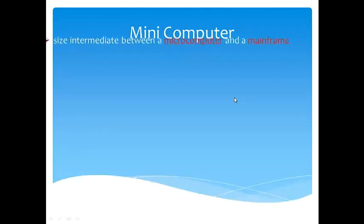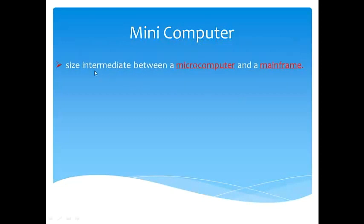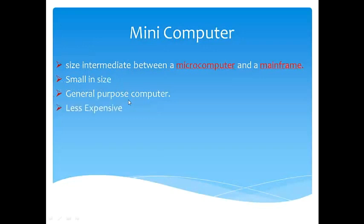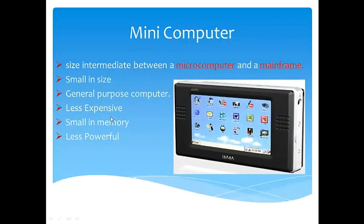Next comes minicomputer. The size of a minicomputer is intermediate between microcomputers and mainframe computers. Minicomputers are small in size and are general purpose computers used at home, office, etc. They are very less expensive, small in size, and small in memory. The processing speed of the minicomputer is very, very low, with small processing power and low processor speed.